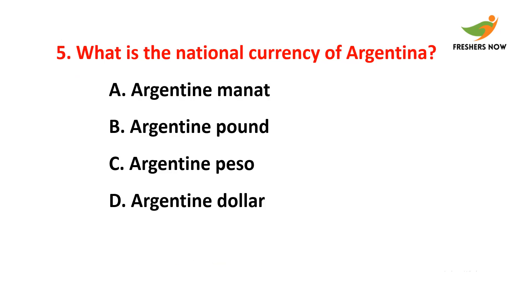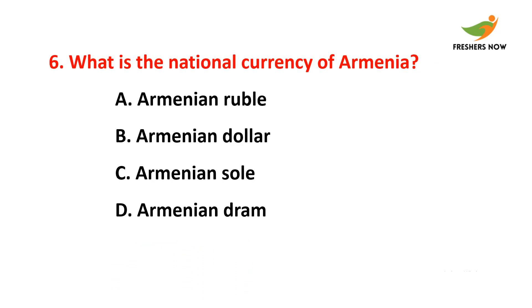Fifth question: What is the national currency of Argentina? The answer is option C — Argentine peso. Sixth question: What is the national currency of Armenia? The answer is option D — Armenian dram.